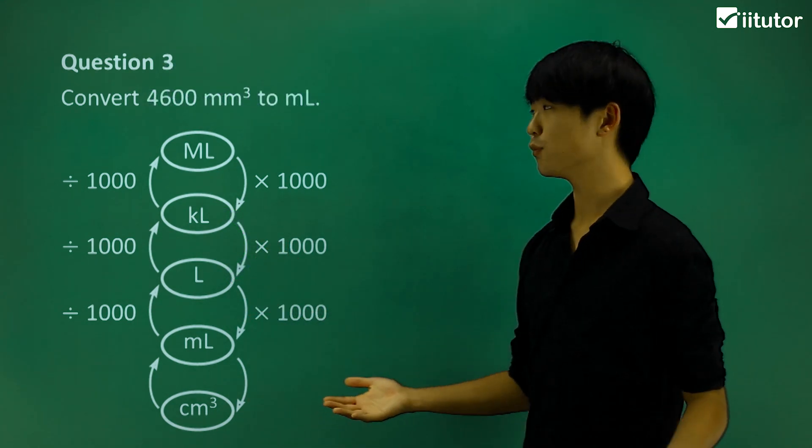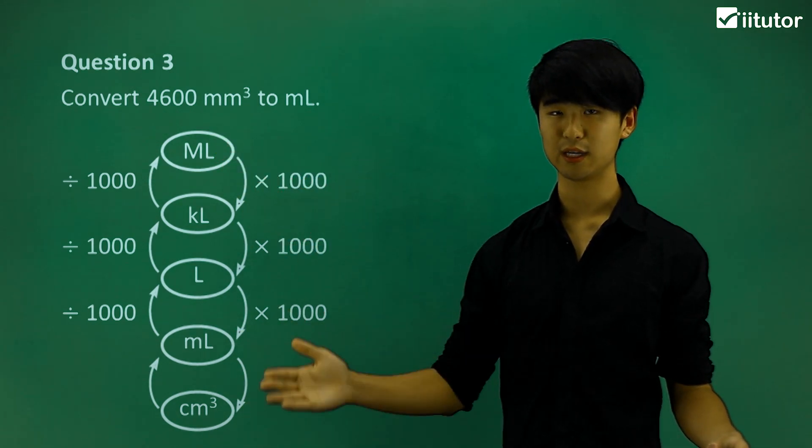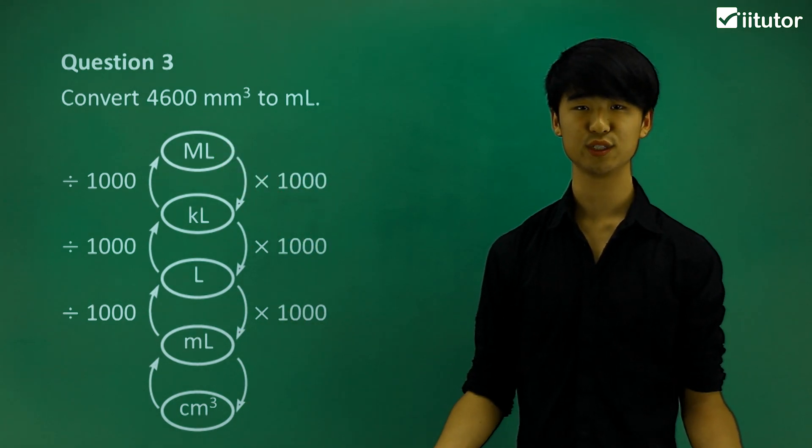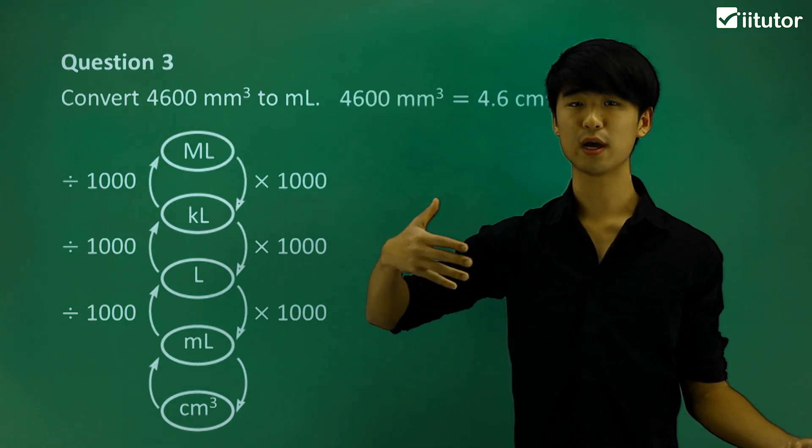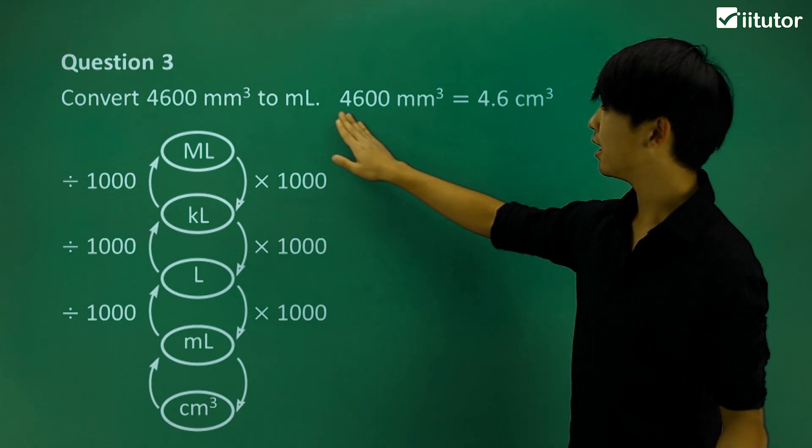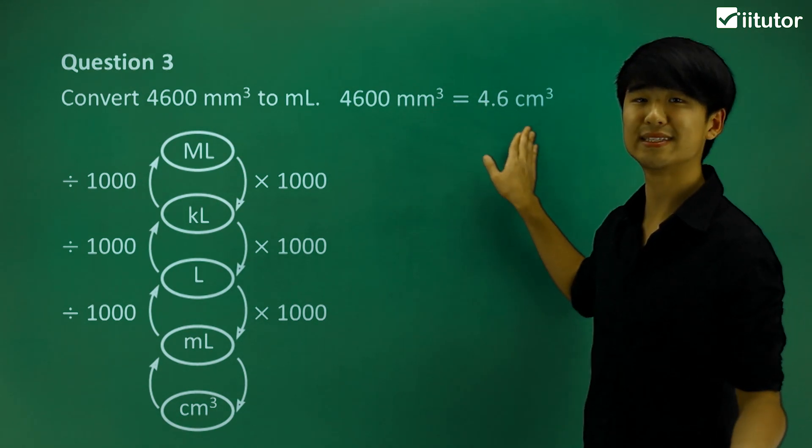Now, looking at question number three, we're going to convert 4,600 millimeters cubed to milliliters. So what I want to do first is, instead of trying to work with millimeters cubed, I'm going to note that I can change that. I'm going to divide both sides by 1,000 to get centimeters cubed.